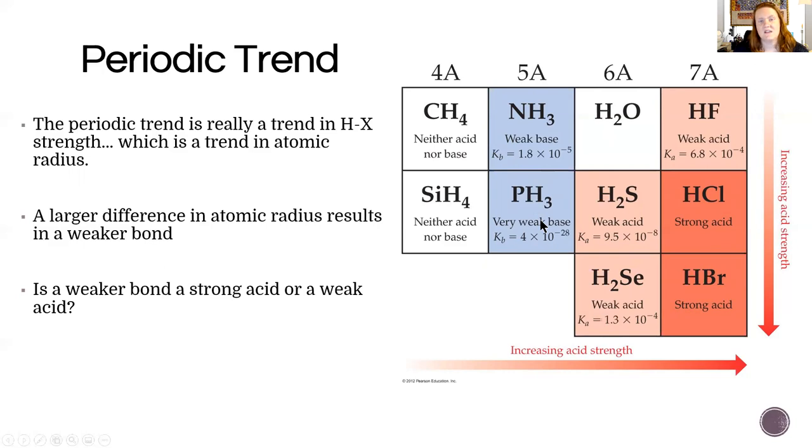Group 15 tends to be bases because you have lone pairs of electrons to accept a hydrogen on, but the stronger weak bases are going to be located at the top and they get weaker and weaker as they go down. Group 14 does not have acid or base characteristics because they don't have any electrons to share and they don't particularly like to hold electrons from other places, so they tend to form covalent compounds.